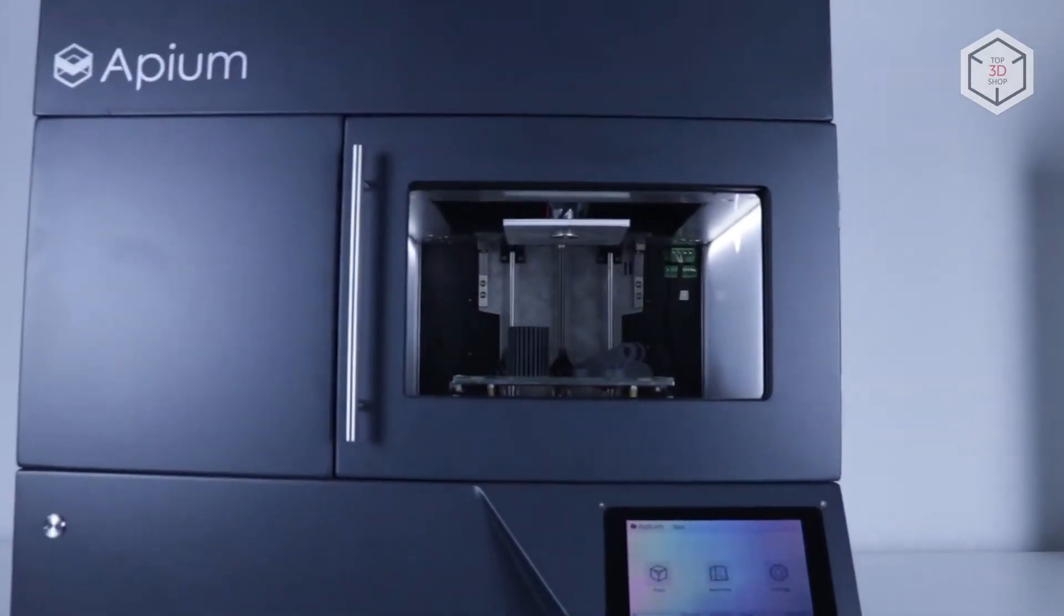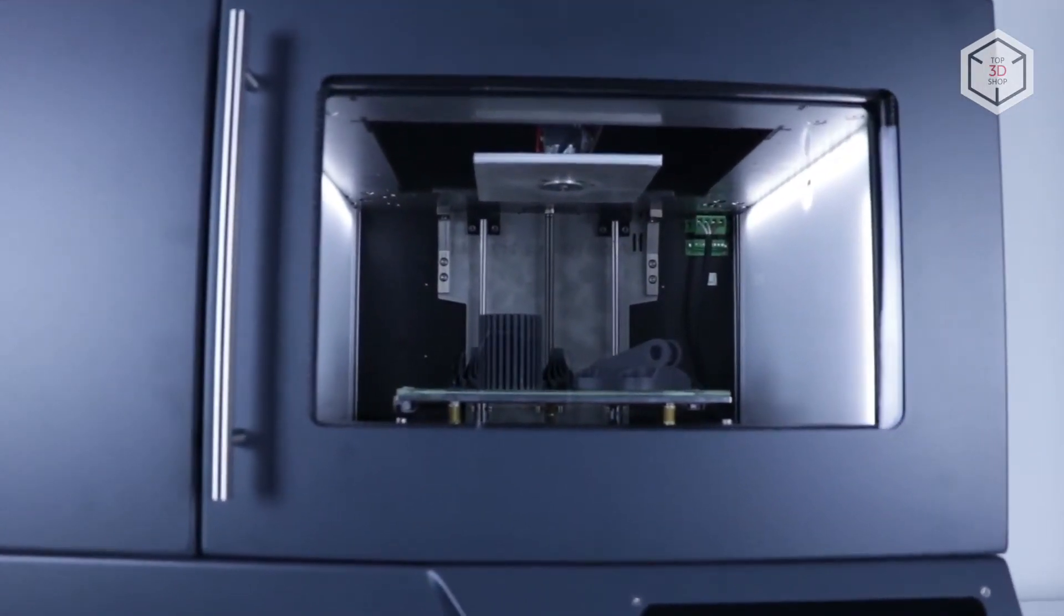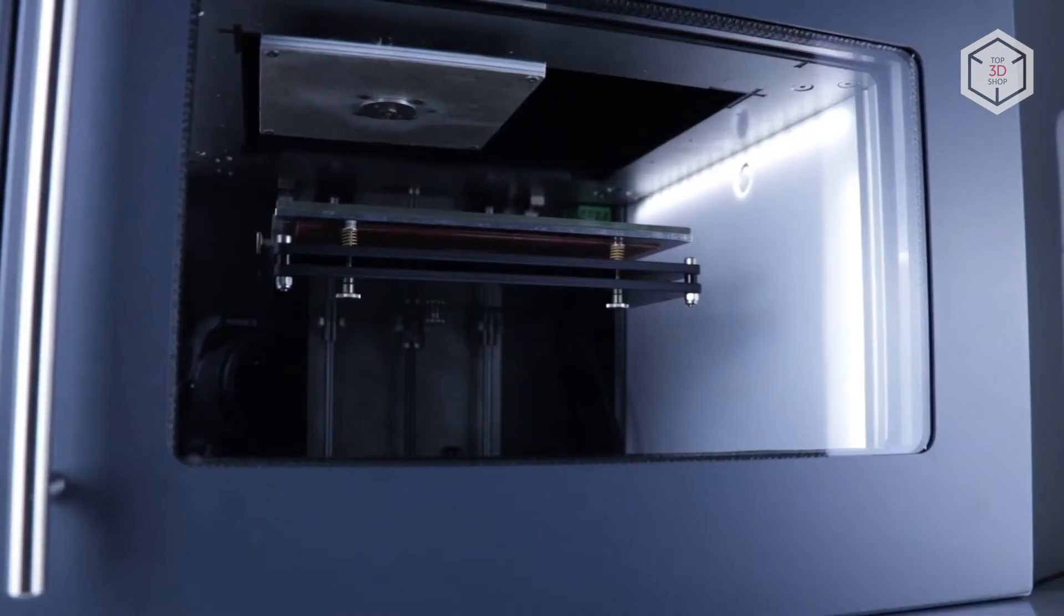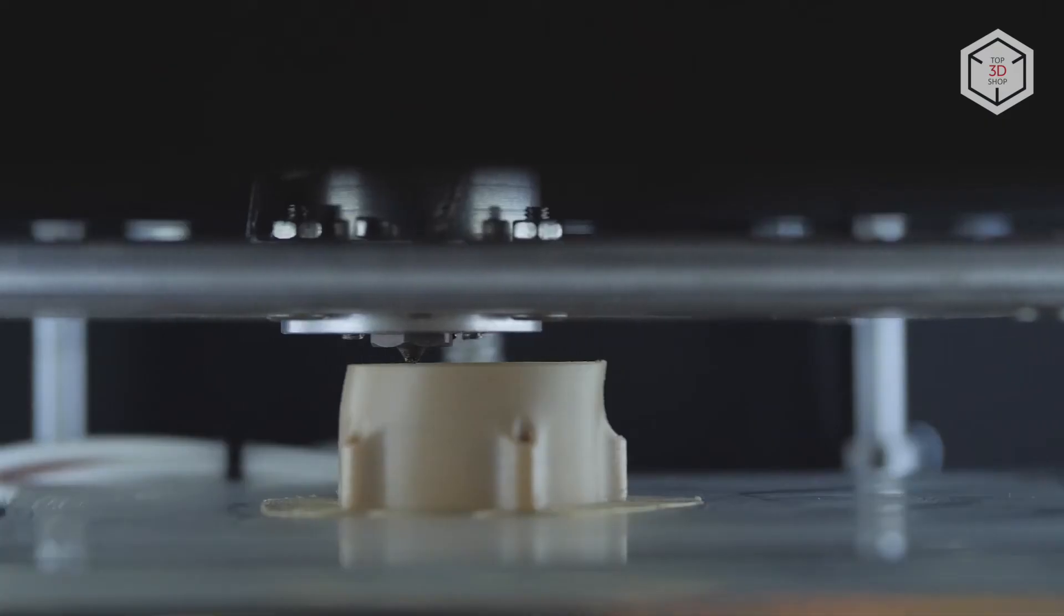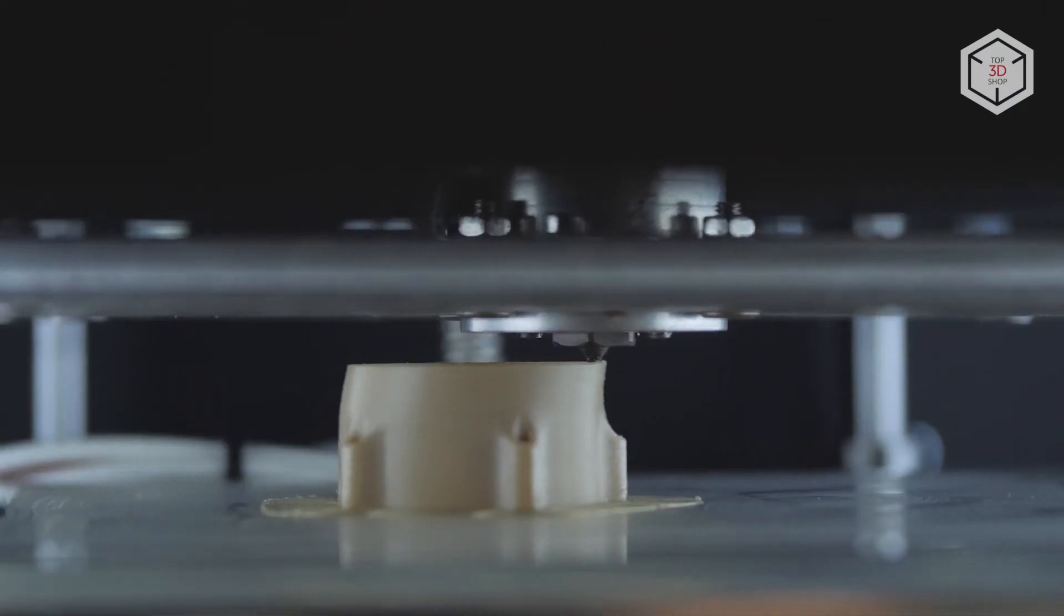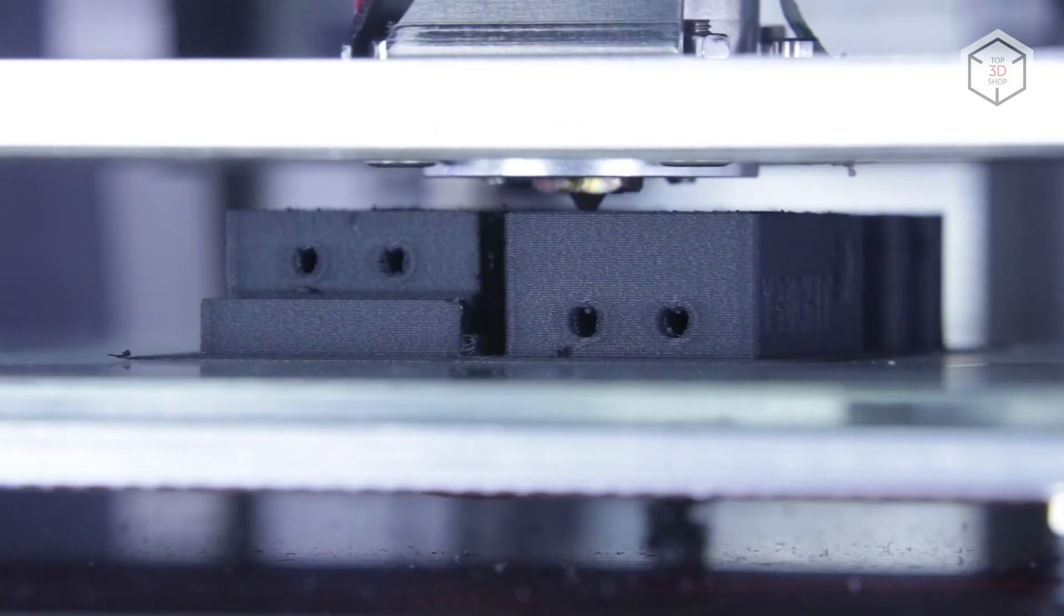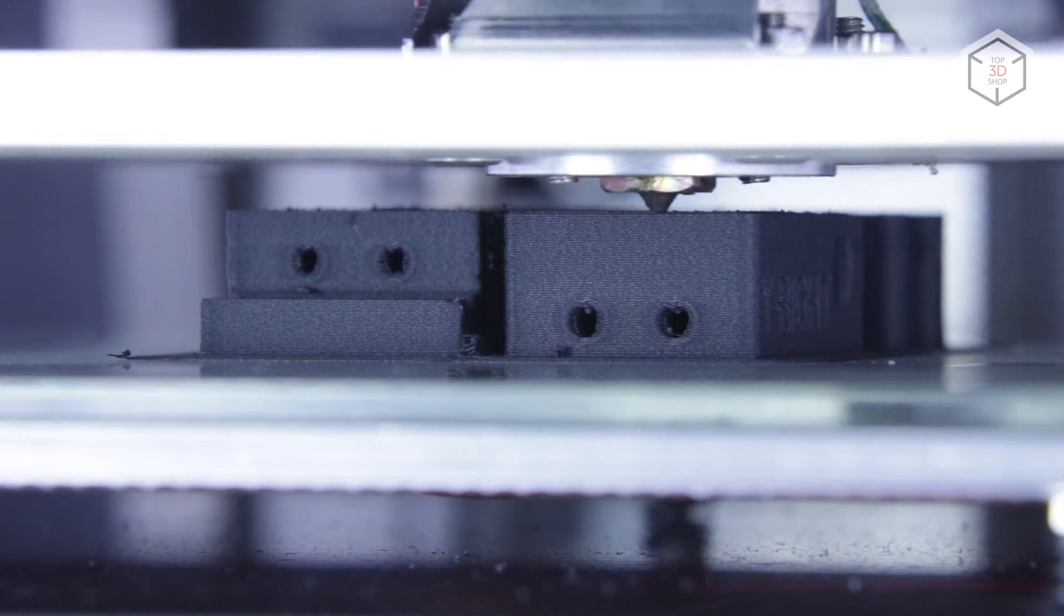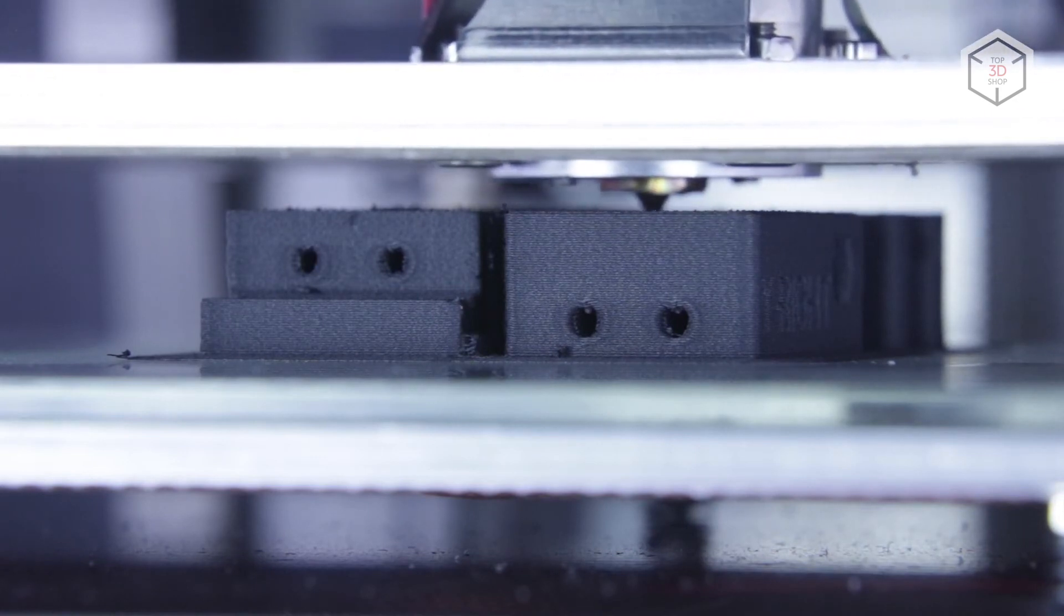The P220 model is a unique 3D printer capable of processing pure PEEK with high crystallinity or carbon fiber reinforced PEEK with up to 30% fiber content. The main specs of the device are: maximum extruder temperature 540 degrees Celsius, platform heating up to 160 degrees, build volume 205 by 155 by 150 millimeters, and layer thickness from 50 to 600 microns.